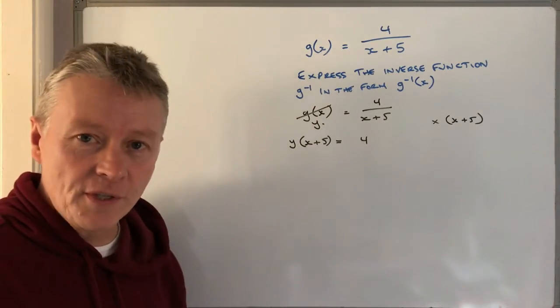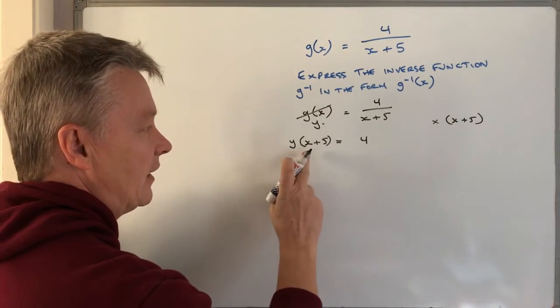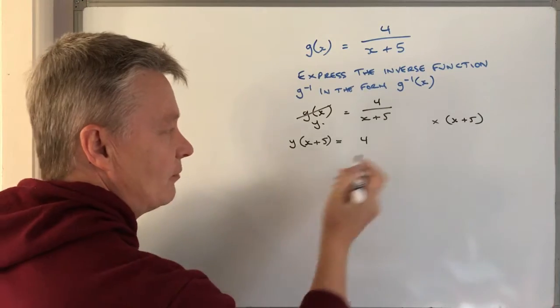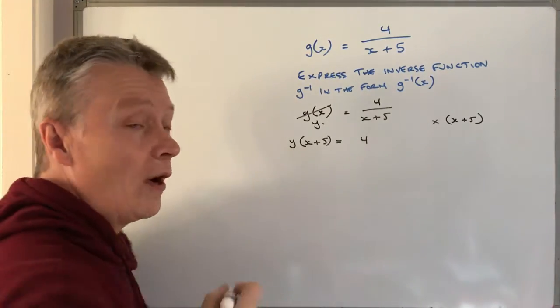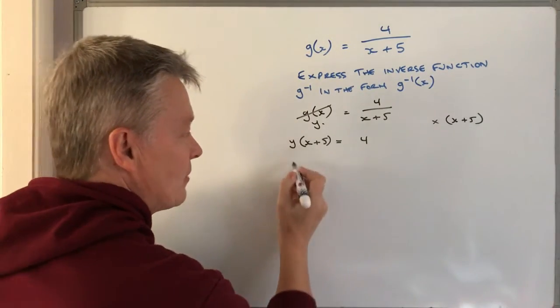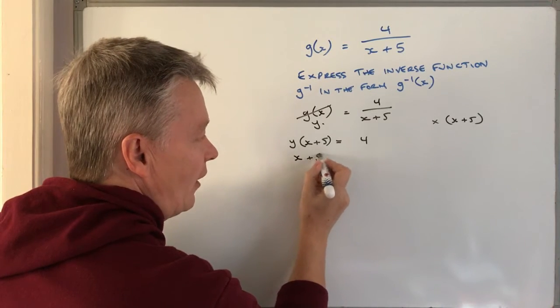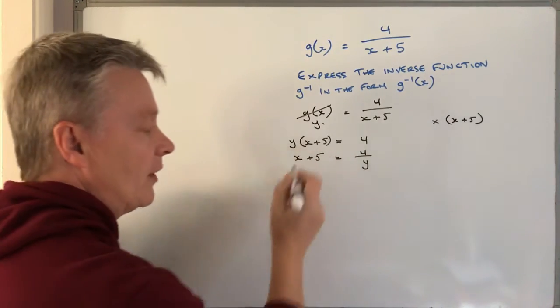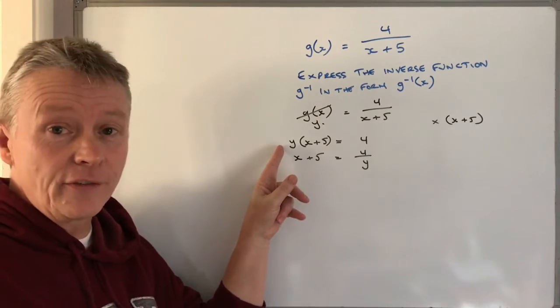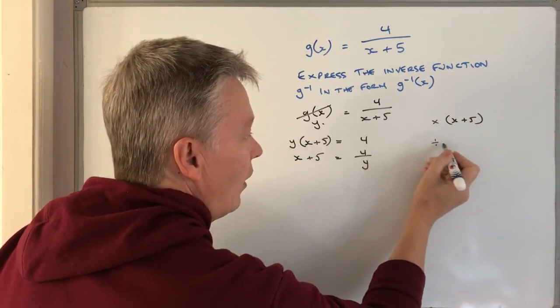We're in a position where I can isolate x by dividing through by y, or at least I can get x+5. So I end up with x+5 = 4/y, dividing through by y.